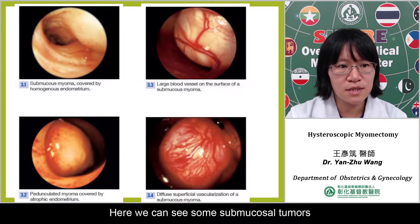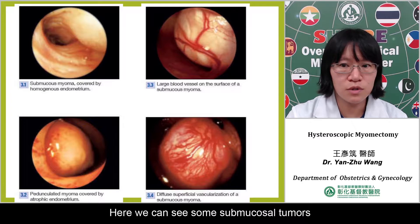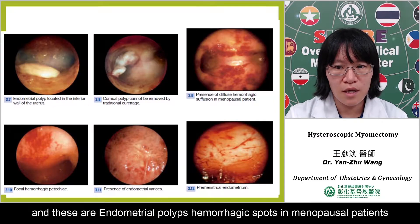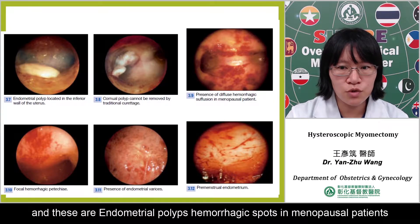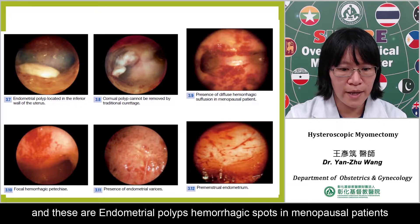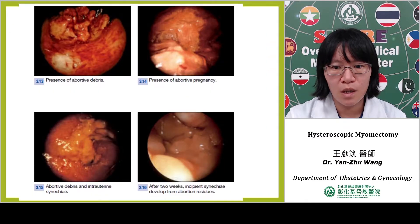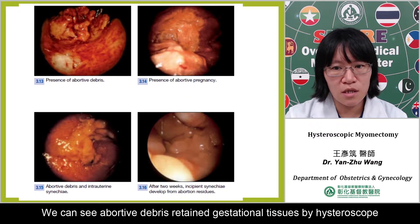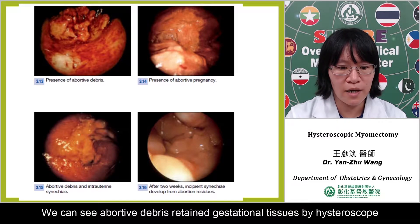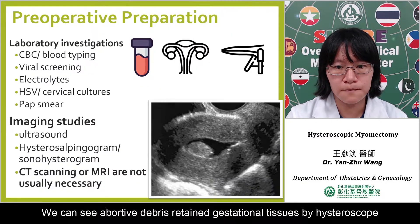These are some pictures of diagnostic hysteroscopy. Here we can see some submucosal tumors, endometrial polyps, and hemorrhagic spots in menopausal patients. We can also see abortive debris with tamped gestational tissues by hysteroscope.